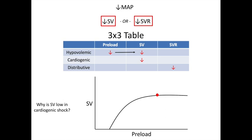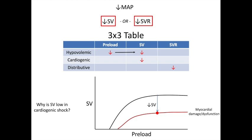Why is stroke volume low in cardiogenic shock? It's similar but different. Instead of moving along the Frank-Starling curve, the whole curve itself shifts down because of myocardial damage or dysfunction — meaning for any given preload, the heart just doesn't have the power to contract back and eject. So stroke volume is down for any given preload. Because the heart is backed up with more volume, preload actually increases. Cardiogenic shock is basically the reverse of hypovolemic: a low stroke volume leading to a high preload, rather than a low preload leading to a low stroke volume.